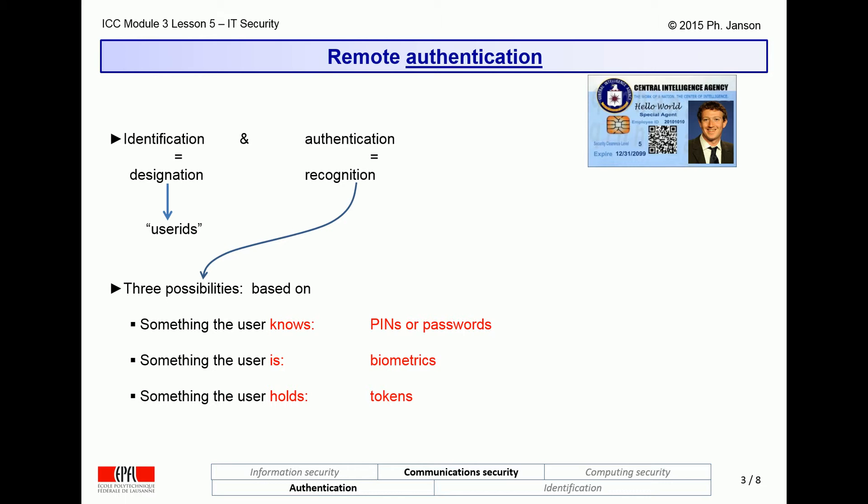There are three fundamental ways in which an IT system can do so. First, by asking the user for some secret that only they know, such as a PIN or a password. Second, by asking the user to present something that they are — i.e., some biometric trait — such as a fingerprint. Or third, by asking the user to prove that they hold something that belongs only to them, typically a token or a chip card.